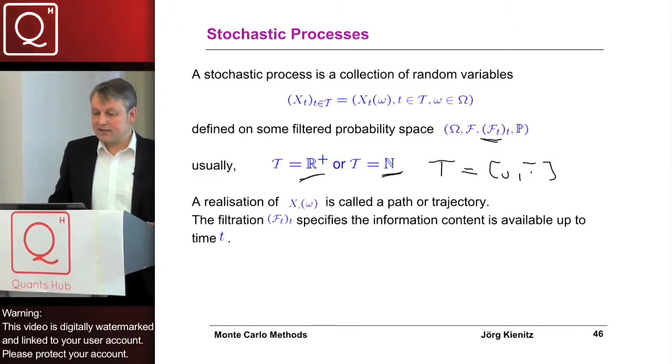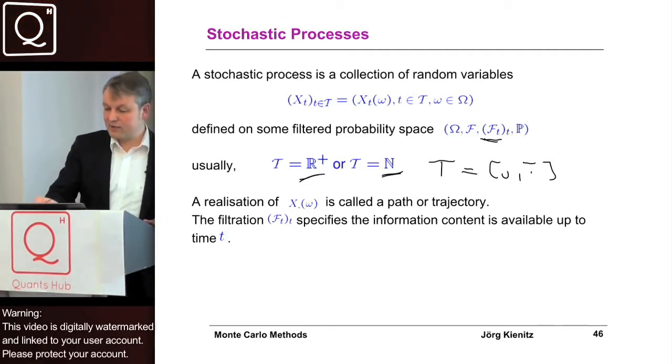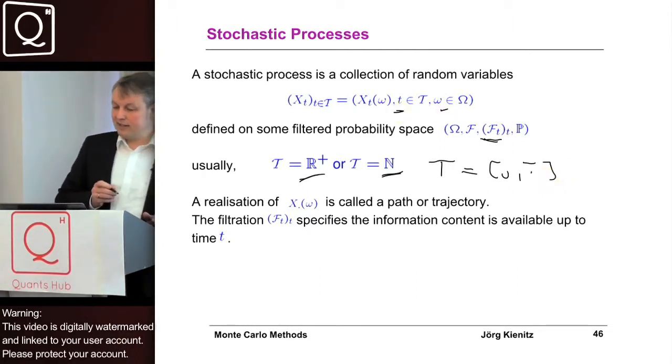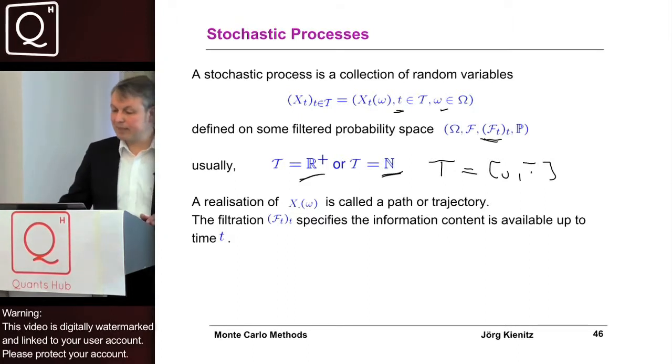A stochastic process is not only a collection of random variables but has two variables: omega and T. For fixed T, it's a random variable because it depends on omega. But if we fix omega, it is a function from this calligraphic T to the real numbers.